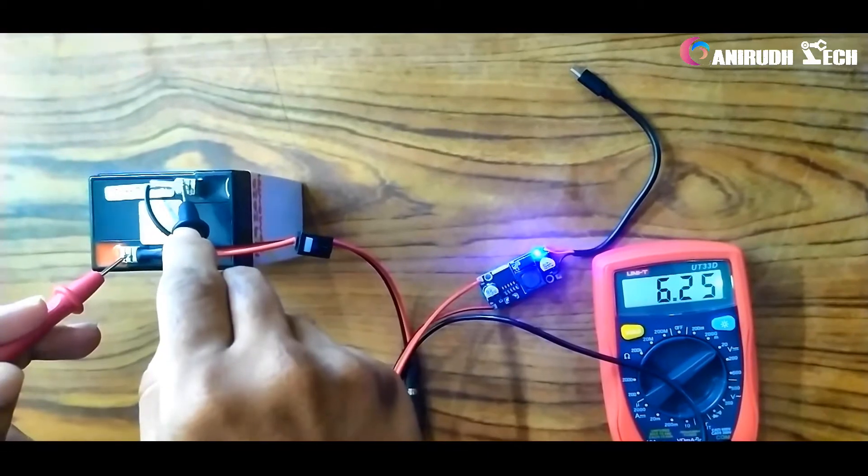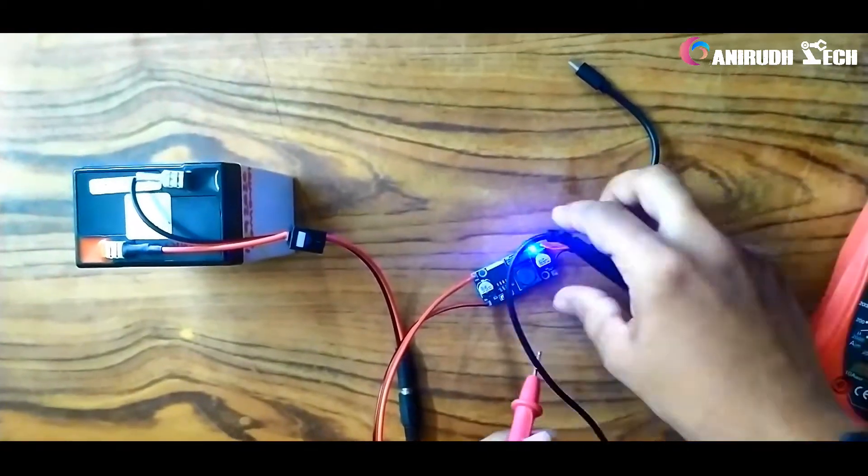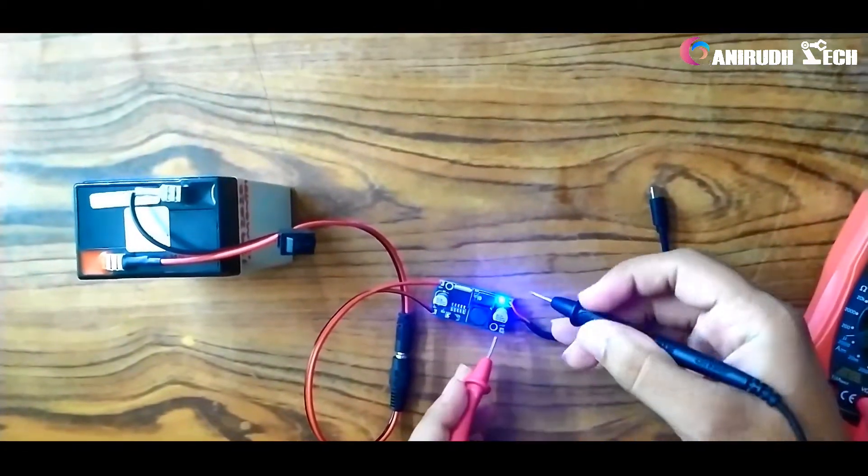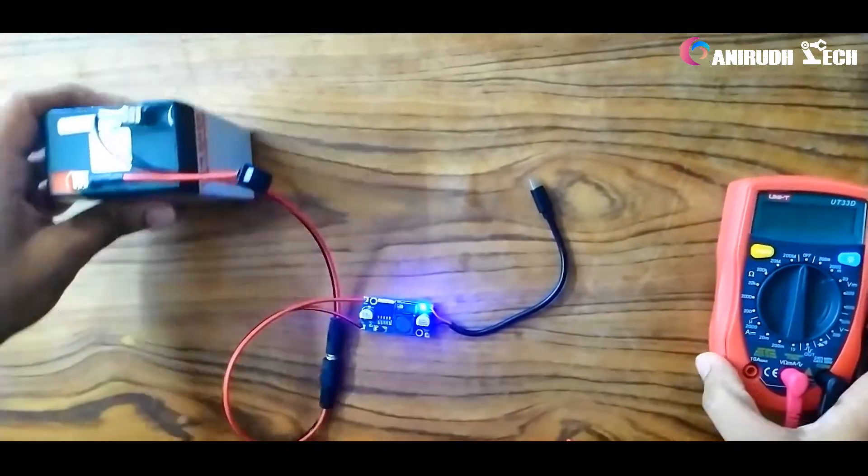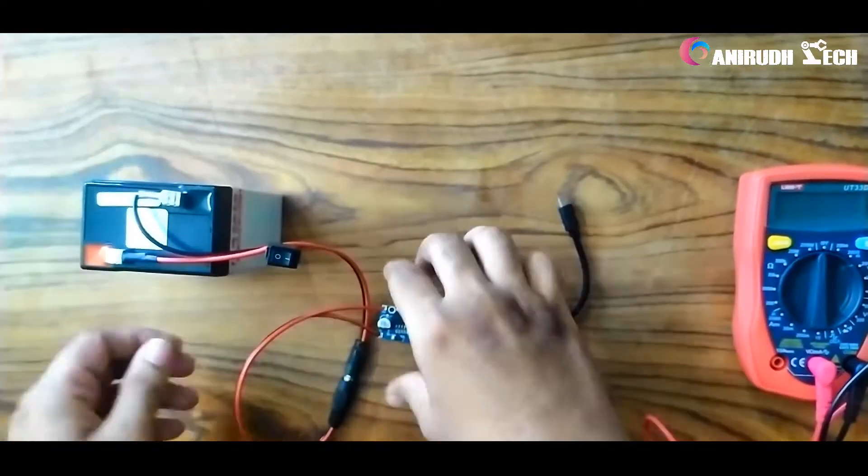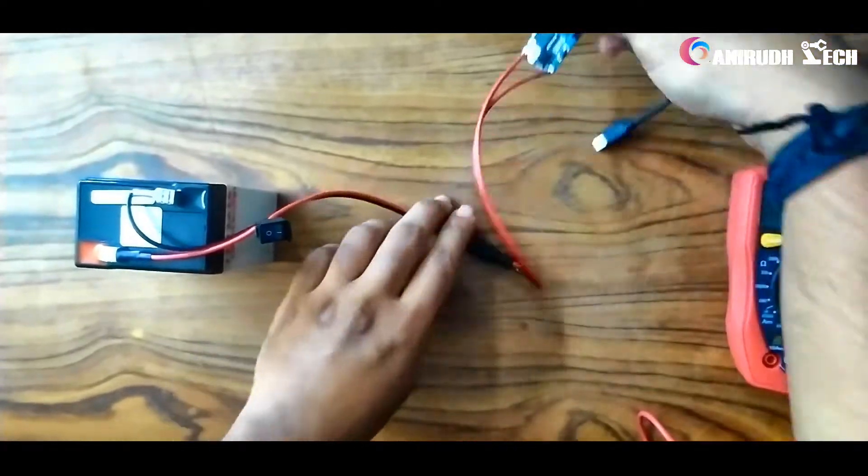The input voltage is 6.25. We can check the buck converter output is 5.3 volts. Now for charging our battery I am using a step down transformer.